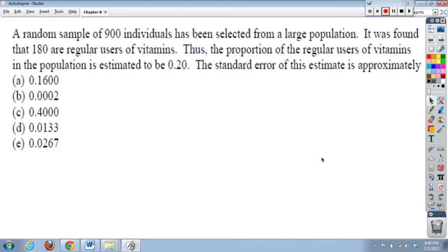So the first question says, a random sample of 900 individuals has been selected from a large population. It was found that 180 are regular users of vitamins, thus the proportion of the regular users of vitamins in the population is estimated to be 0.20. The standard error of this estimate is approximately. Now if you would like to try this problem on your own, pause the video at this time.